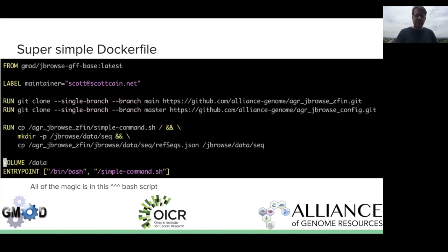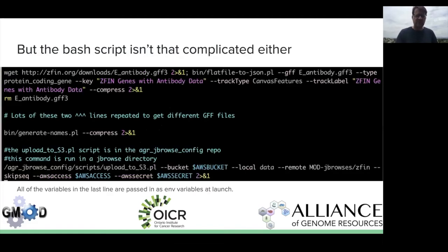The Dockerfile itself is super simple. It just pulls in some configuration data and a tool from two repos, moves some files around to make life easier, and then runs this bash script. All of the magic is in this bash script, but it isn't that complicated either, at least for ZFIN data. Basically, it's these two lines of code that fetch the data and process it into nclist, then delete it when done. Then it runs the JBrowse name indexer and uploads all of that data to an S3 bucket. All the shell variables are passed in as environment variables when it's launched.